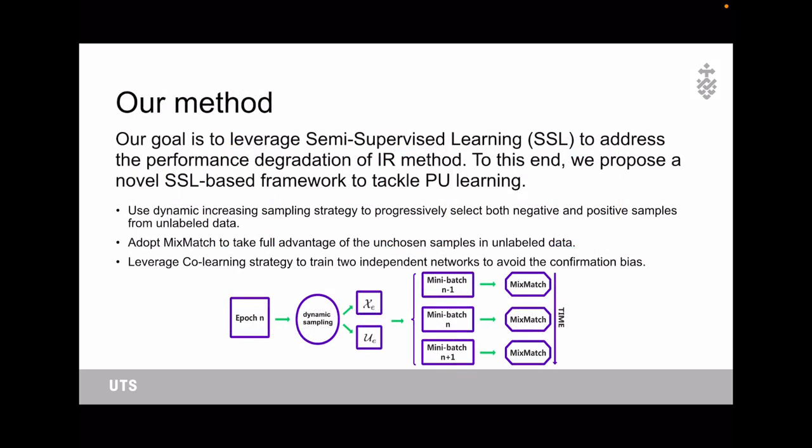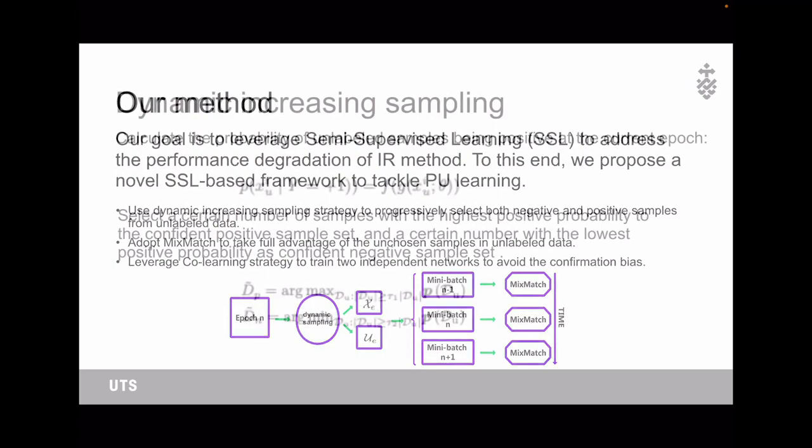To address this problem, our method is to leverage semi-supervised learning to address the performance degradation of importance-reweighting method. To this end, we propose a novel SSL-based framework to tackle PU learning. First, we use dynamic increasing sampling strategies to progressively select both negative and positive samples from the unlabeled data. Then we adopt MixMatch, which is a semi-supervised learning backbone, to take full advantage of the unchosen samples in the unlabeled set. On top of that, we leverage co-learning strategies to train two independent networks to avoid confirmation bias.